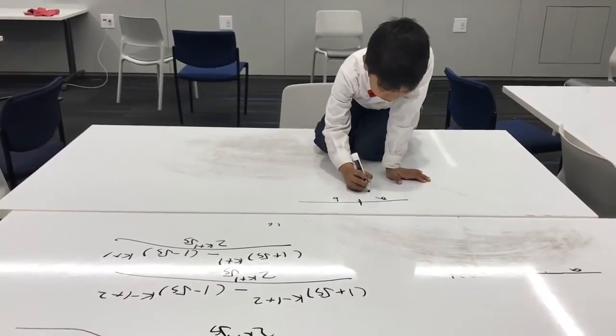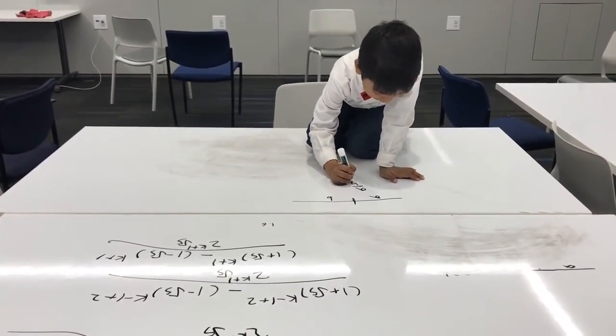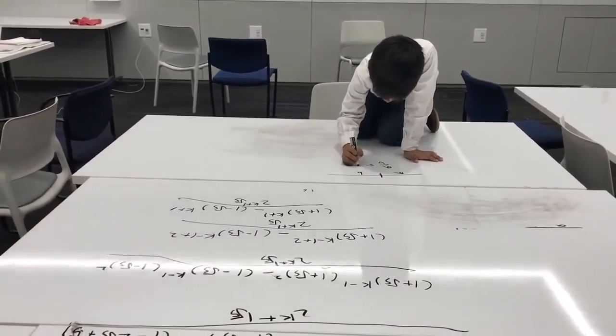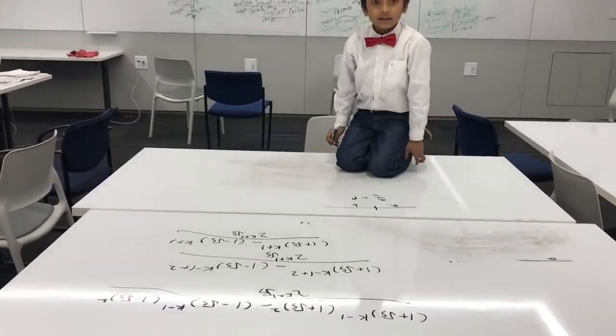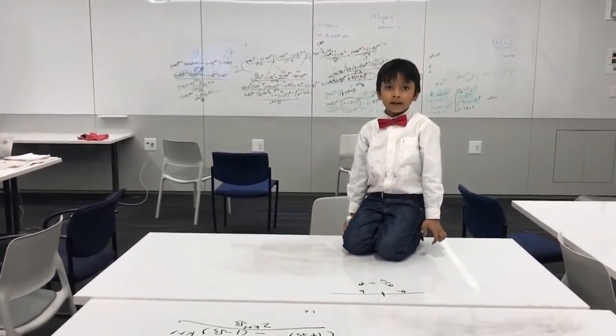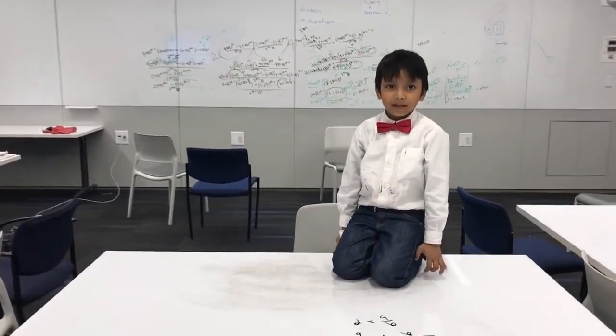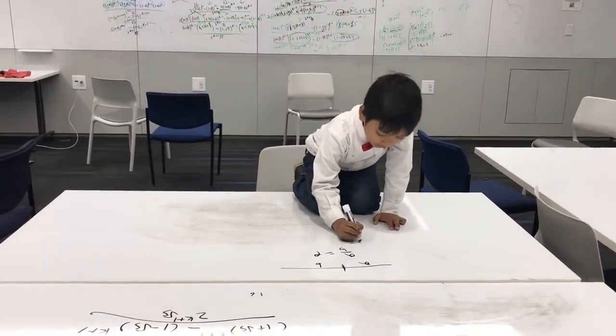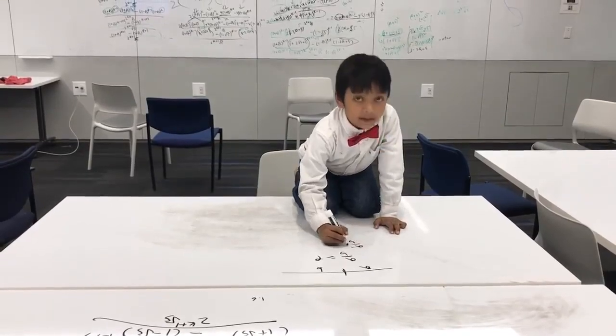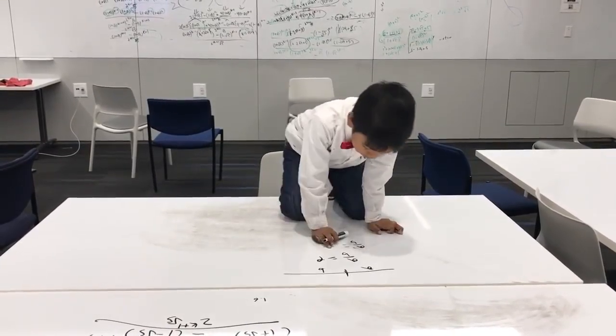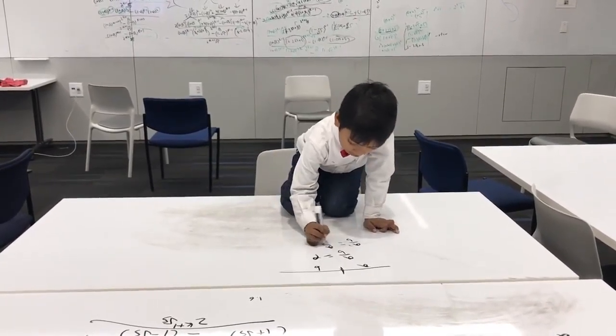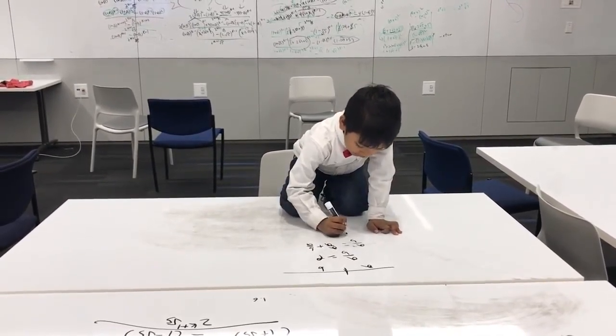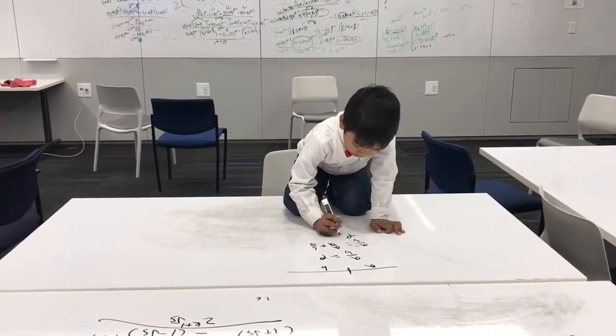So A over B equals a funny Greek letter called phi, like the English letter P, or if you're doing P in the back. So A over B equals... A over A plus B over A. A plus B equals that funny Greek letter called phi, equals...